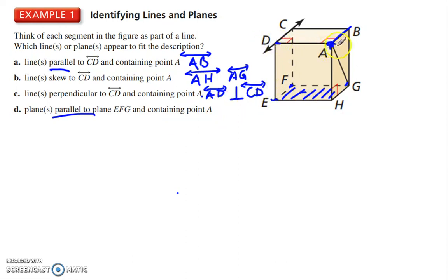And that would be plane A, B, C, or A, D, C, or D, C, B, any way you want to name that. So that is plane, I'll call it A, B, C, because if we can go in alphabetical order, that's the preference.